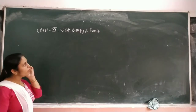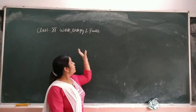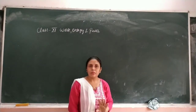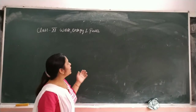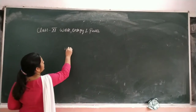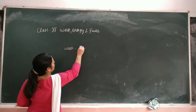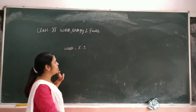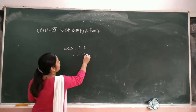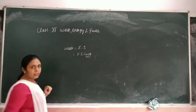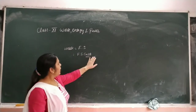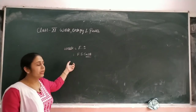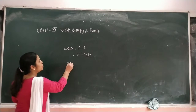In the last video we discussed the topic of work. Work mein kya tha? Force into displacement. Work is equal to F dot S, that means F is force and S is the displacement. We can write it as FS cosθ. Work depends on the angle theta. Work kya si quantity hai? Scalar quantity. And the unit of work is Joule.